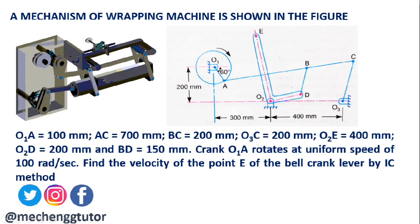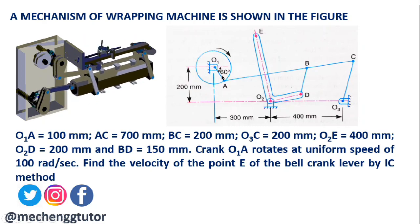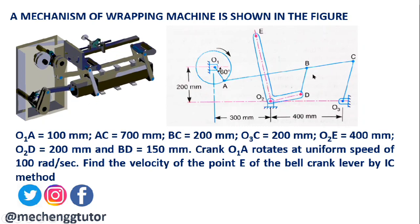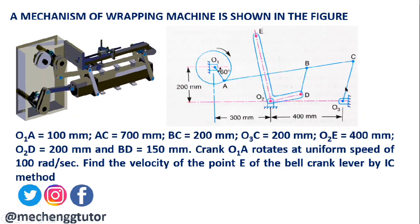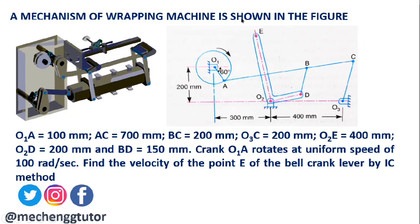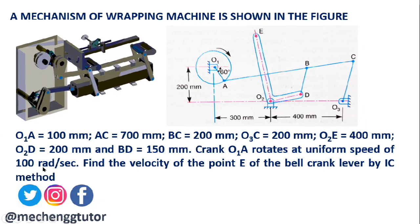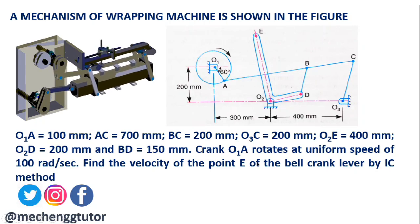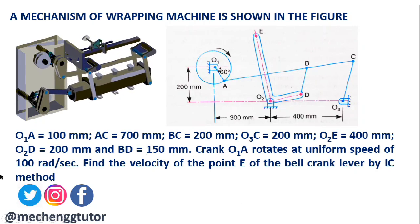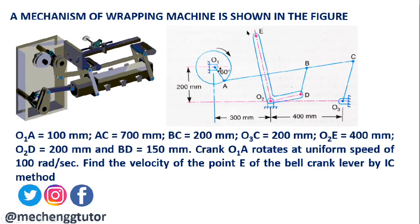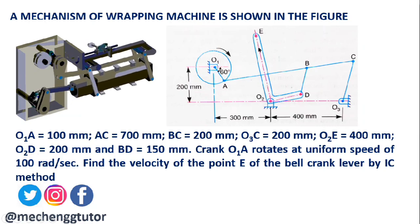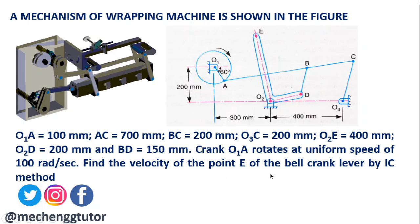The given data: we have six links in total. O1A is 100 mm, AC is 200 mm, BC is 200 mm, O3C is 200 mm, O2E (part of the bell crank) is 400 mm, O2D (another part of the bell crank) is 200 mm, and BD is 150 mm. Though the dimensions are seven in number, the bell crank E-O2-D is considered as one link, so this is a six-link mechanism.